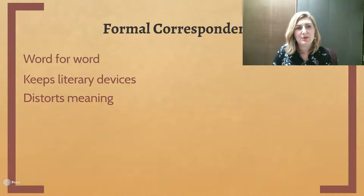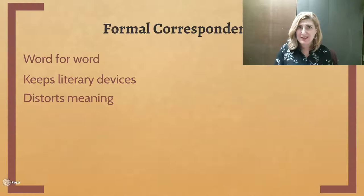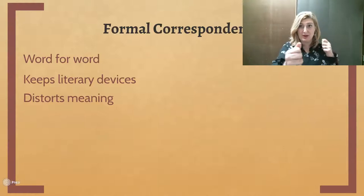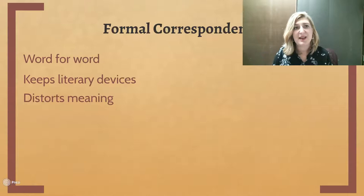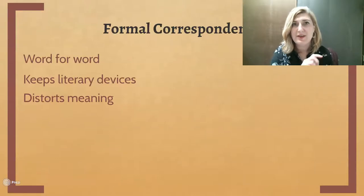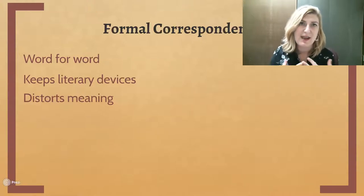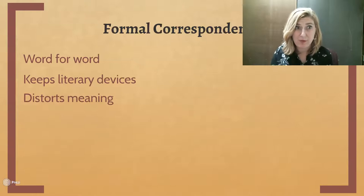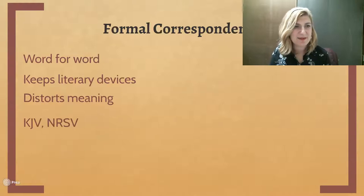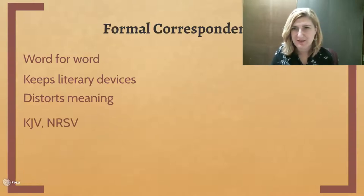But sometimes it can distort meaning. For example, when you read about the rainbow that appears in the sky after the flood, the Hebrew Bible says a bow appeared in the sky — it doesn't say rainbow. It's talking about a bow and arrow. Your word-for-word translations are not going to say, 'Oh, I know they're talking about a rainbow, so I'll just write rainbow.' They're going to keep 'bow' there. So it can distort meaning and sometimes doesn't go that extra mile of making it readable. Some examples are the King James Version and the NRSV — those are formal correspondence.